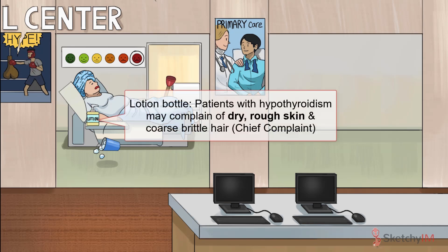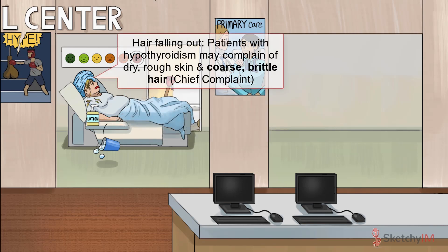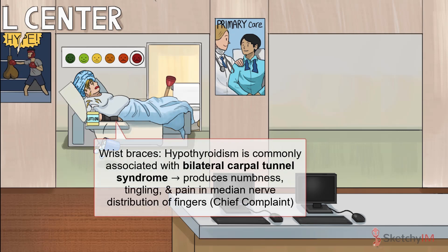Break out the lotion and leave-in conditioner. Patients with hypothyroidism often complain of dry, rough skin and coarse, brittle hair. These changes occur as a result of the accumulation of matrix glycosaminoglycans in the interstitial spaces of skin and hair. Those wrist braces she's wearing are here to remind you that hypothyroidism is commonly associated with bilateral carpal tunnel syndrome, believed to be due to mucin deposition within the carpal tunnel, increasing pressure on the median nerve and leading to numbness, tingling, and pain in the first three fingers and half of the fourth finger.